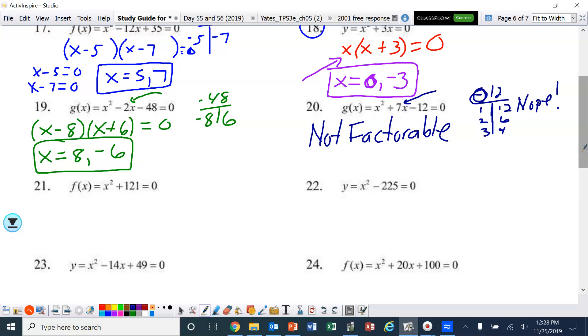All right, 21. So we've got x squared plus 121. Okay, well, there's only two terms. And in order to factor that, ladies and gentlemen, it would need to be a minus sign. So it's not. It's a plus sign. So again, we run into one that is not factorable.